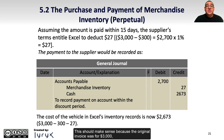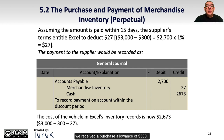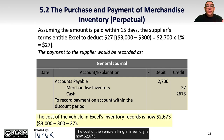This should make sense because the original invoice was for $3,000, we received a purchase allowance of $300, and then an early payment discount of $27. The cost of the vehicle sitting in inventory is now $2,673.